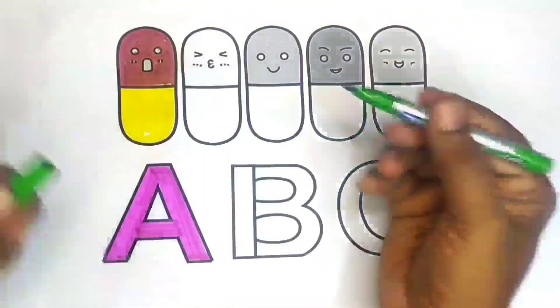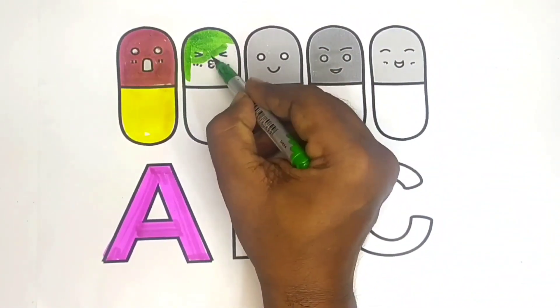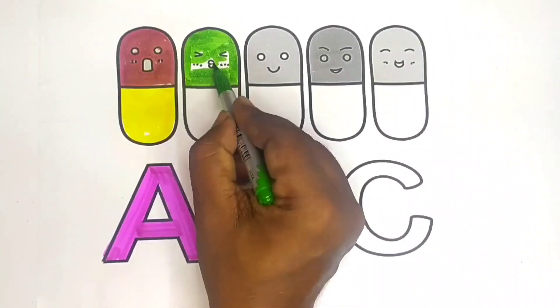This is green color. A, B, C, D, E, F, G, H, I, J, K, L, M, N, O, P.